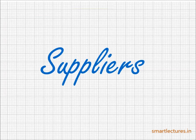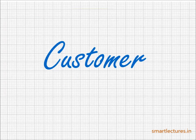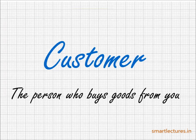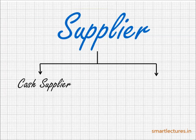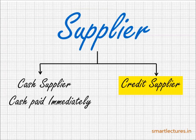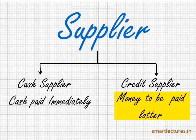Goods are always purchased from suppliers and then sold to customers. The person who buys goods from you is called a customer, and the person who sells you the goods is called a supplier. The supplier can be of two types: cash supplier or credit supplier. A cash supplier means you buy the goods and pay cash immediately. A credit supplier means you buy the goods and the supplier allows you credit — you can pay the money after some time, maybe one month, maybe five months. That credit supplier is called a creditor.